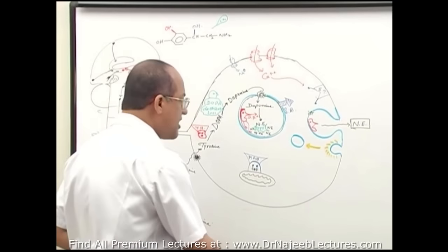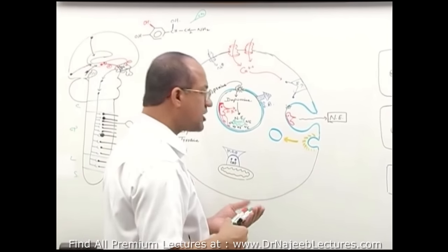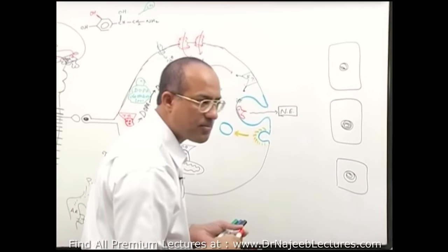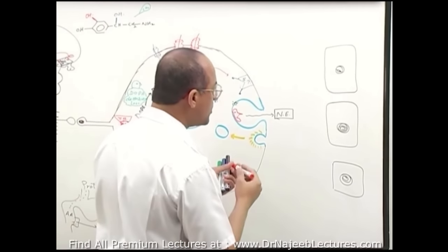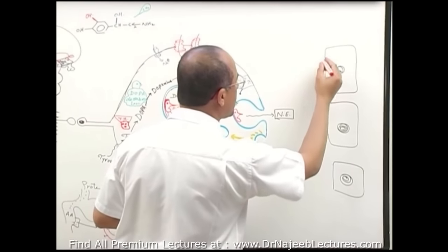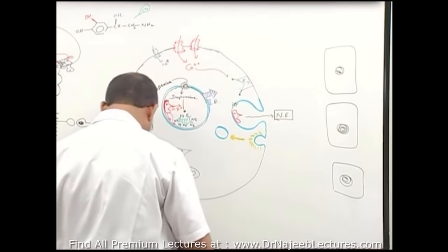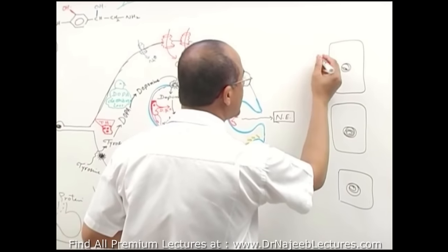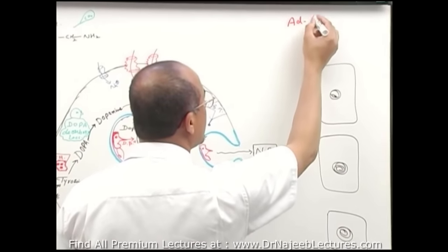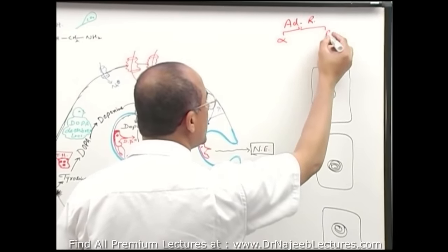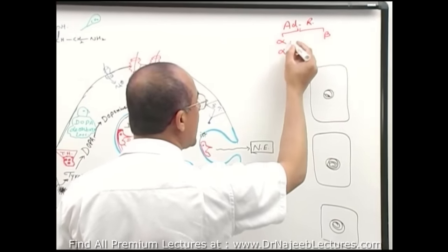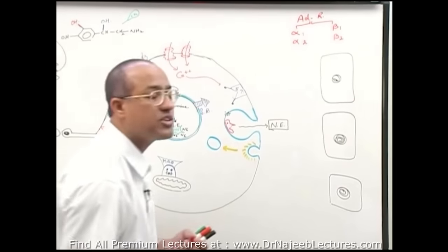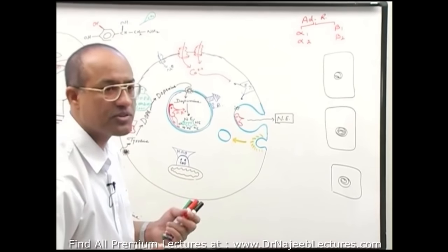Once released, norepinephrine acts on both pre- and postsynaptic membranes. Adrenergic receptors are classified as alpha (α₁ and α₂) and beta (β₁, β₂, and β₃) receptors. Alpha-1, beta-1, and beta-2 are predominantly postsynaptic. Alpha-1 is coupled with Gq protein; beta-1 and beta-2 are coupled with Gs (stimulatory G protein). All adrenergic receptors are 7-pass receptors coupled with intracellular G proteins.